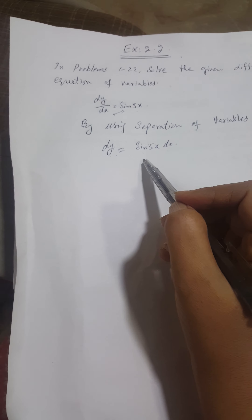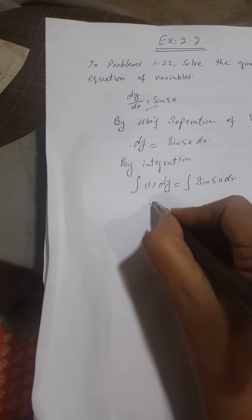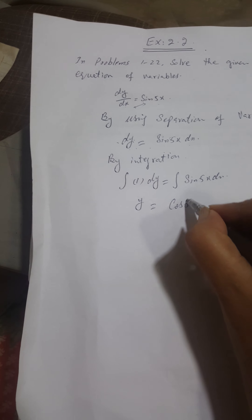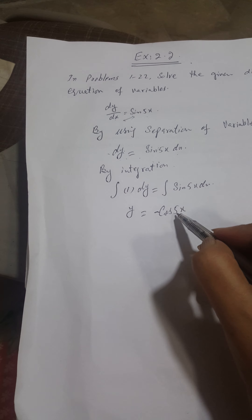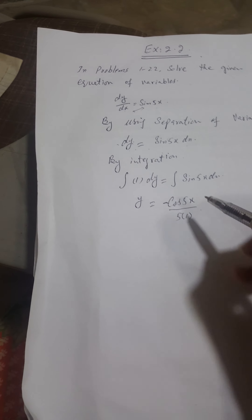Now by using the separation of variables, I will solve it by integration. Integration of 1·dy is equal to integration of sin(5x)·dx. Integration of 1 is y, and sin(5x) integrates to minus cos(5x). The derivative of the angle goes in the denominator: 5 times 1. So that is our required solution: y = −cos(5x)/5 + C, which is our required result.